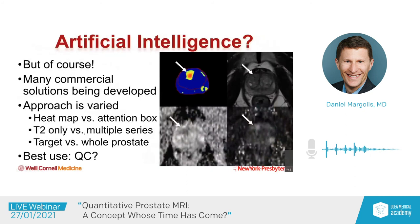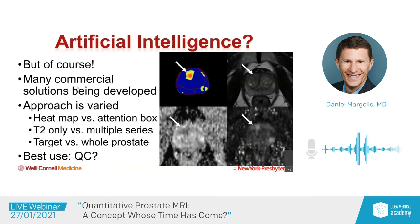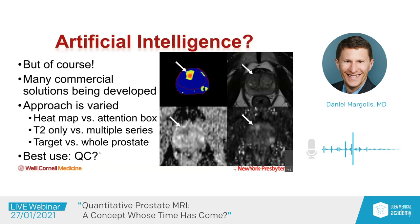The last thing I wanted to talk about was artificial intelligence. This is going to both put us all out of work as radiologists, but also provide a lot more value for what we do and generate more jobs for radiologists — it depends on which venture capitalist you're talking to. There are a number of commercial solutions being developed. The approach is varied: do they provide a heat map or an attention box for something it thinks is suspicious? Does it look at only T2-weighted images versus multi-parametric MRI? Does it only look at a potential target or is it whole gland characterization? The potentially best use of this would be quality assurance and prostate segmentation to identify where an abnormality is.